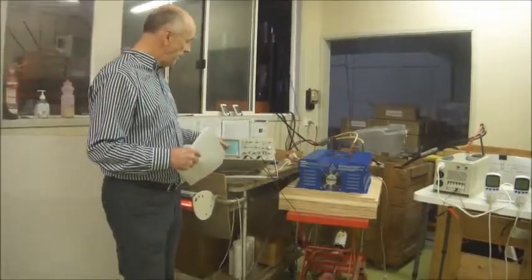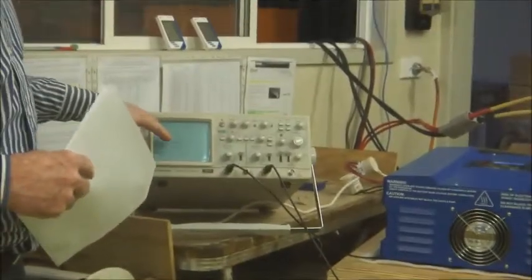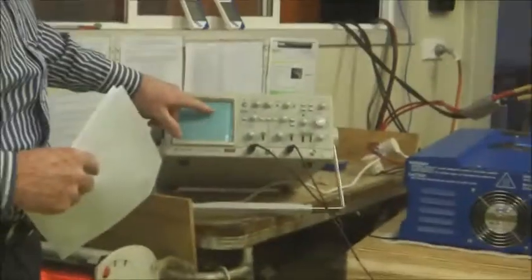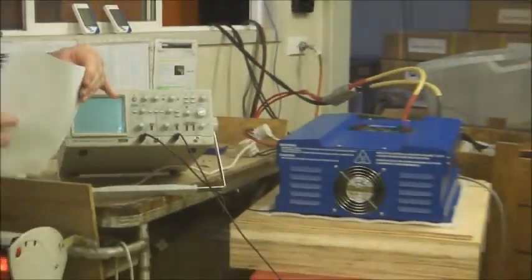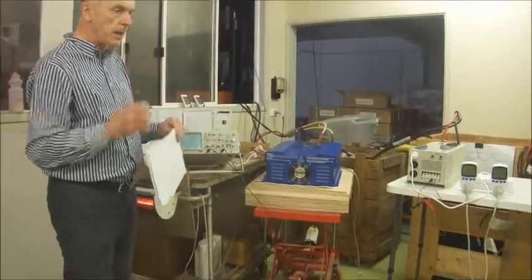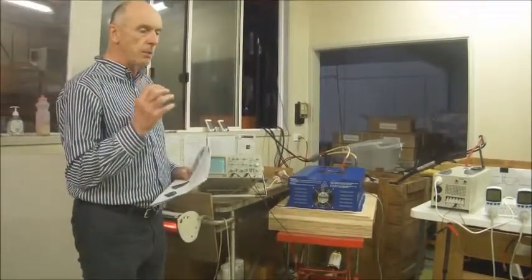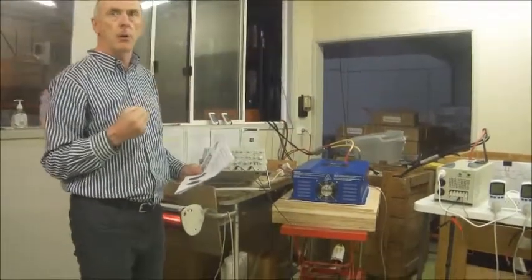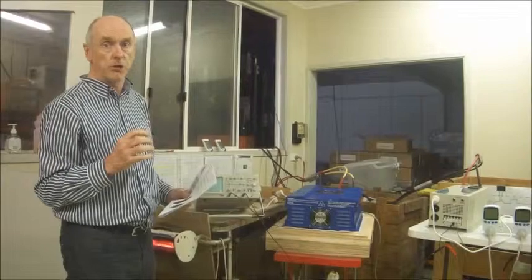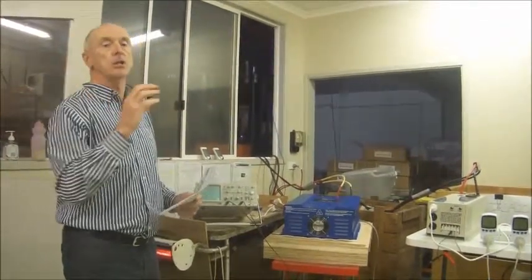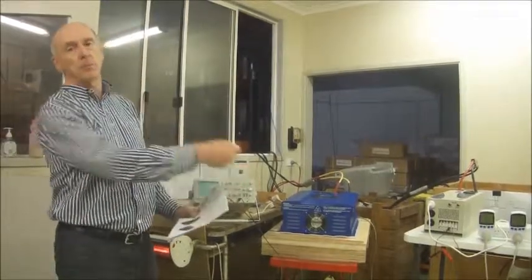At the moment we're looking at the output voltage of the two different types of inverter, and even now you'll notice the top of the waveform there is flat. So even at no load, this inverter over here has already got some total harmonic distortion. Total harmonic distortion is very important — it is a measure of how much real power you'll be able to pull out of the inverter at the fundamental frequency of 50 Hz. As the total harmonic distortion goes up, less and less of the fundamental frequency can be pulled out of the inverter.